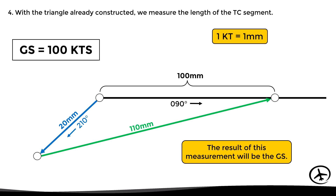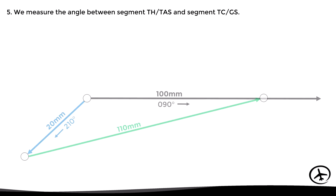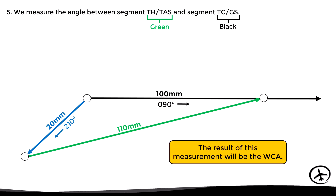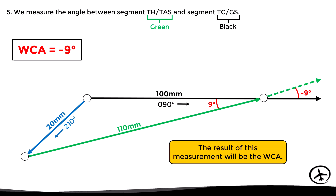With this triangle we can measure the angle between the heading/true airspeed segment and the true course/ground speed segment to determine the wind correction angle, which in this case is 9 degrees. However, analyzing the direction of these lines, we see the correction is actually negative, giving a wind correction angle of minus 9 degrees.